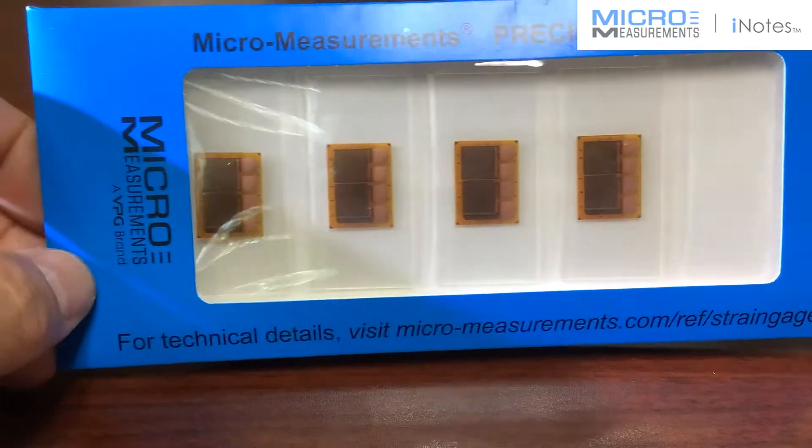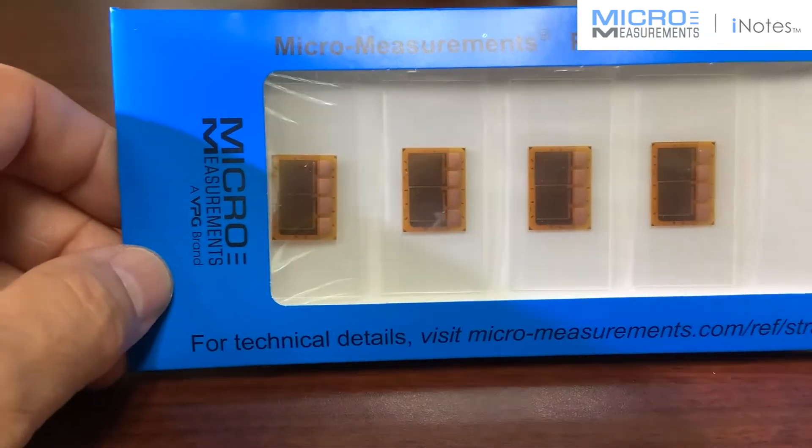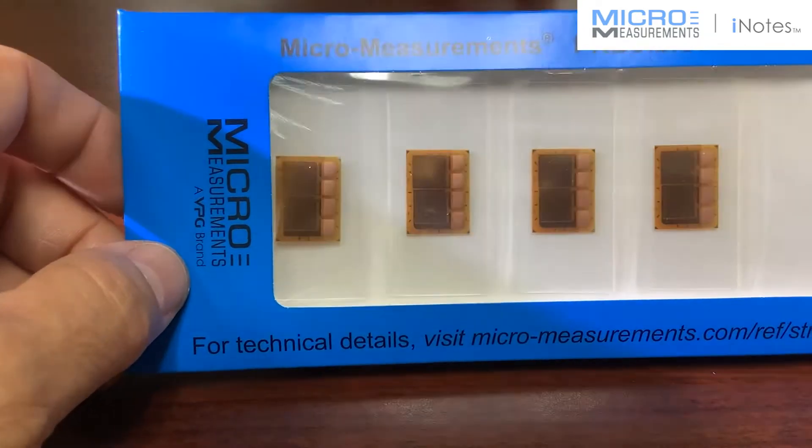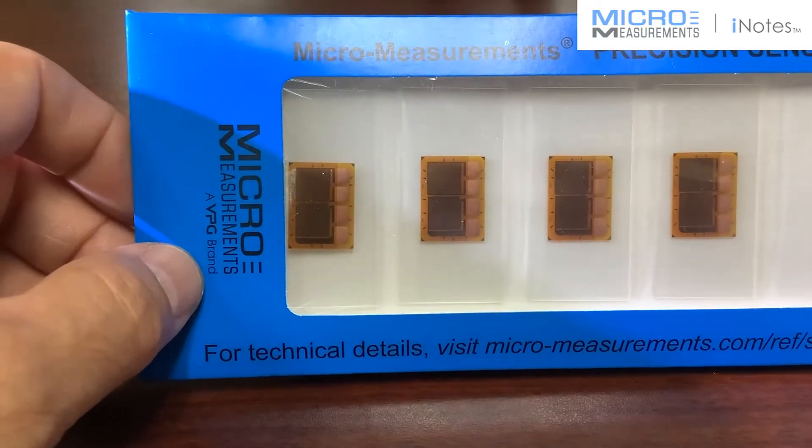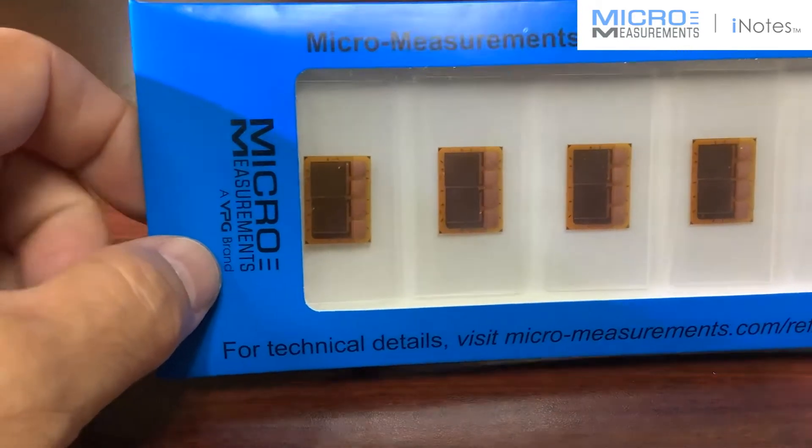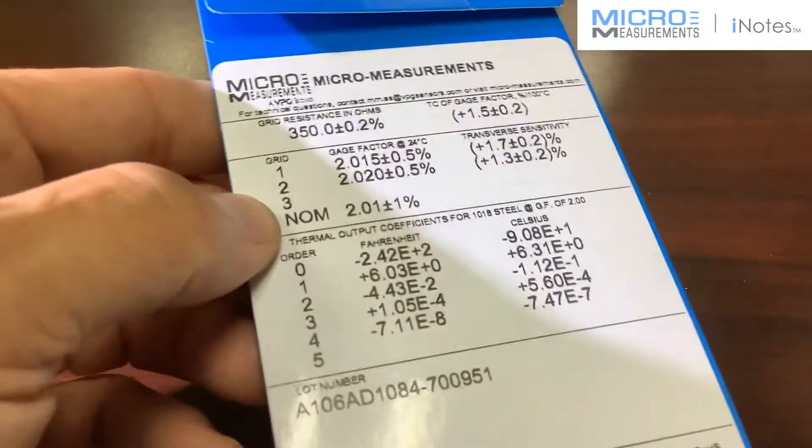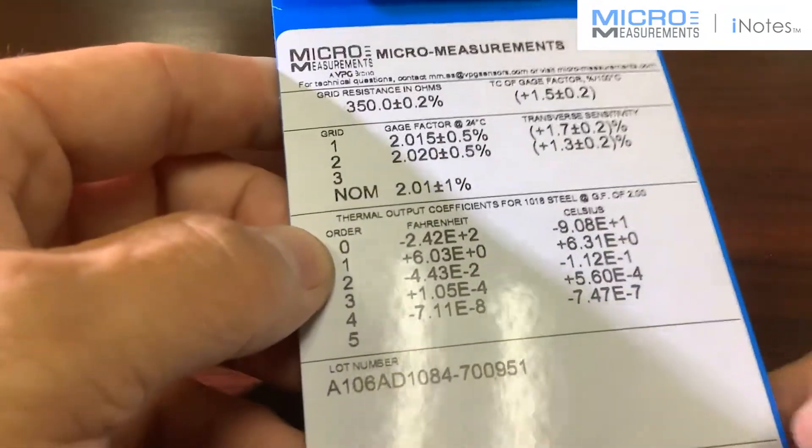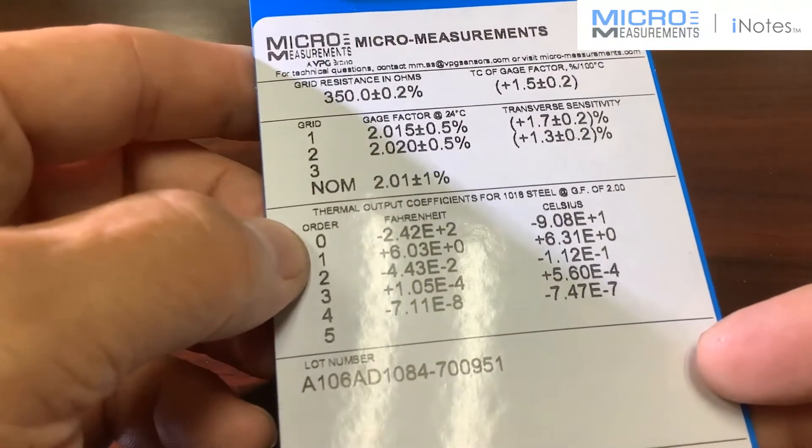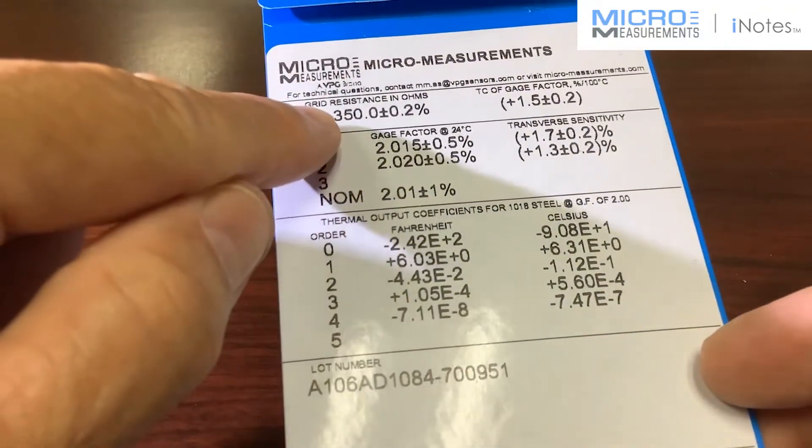In a package of these gauges, you'll have five of the T-rosettes. These five T-rosettes will come with the engineering data that you're accustomed to seeing. If I take the package and flip it over, we can see that we've got the typical technical information that comes with the strain gauges.